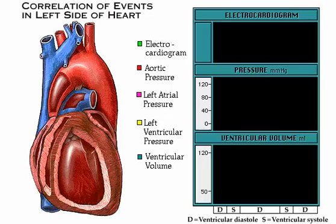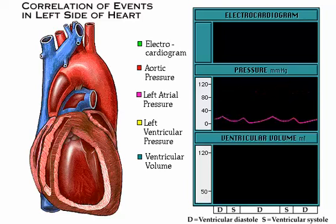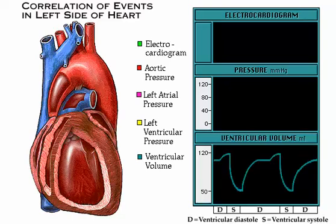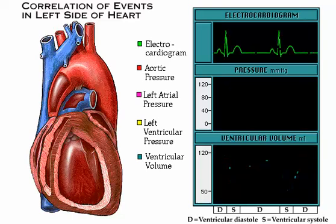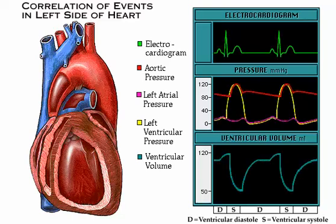Over the next few pages, you'll see animated graphs showing aortic pressure, atrial pressure, ventricular pressure, ventricular volume, and an ECG wave tracing. This series ends by showing all the graphs together.